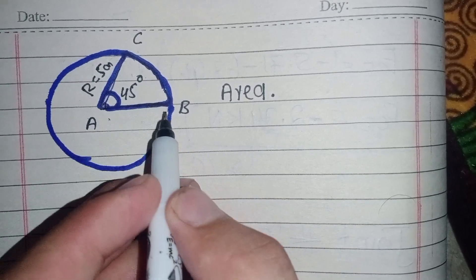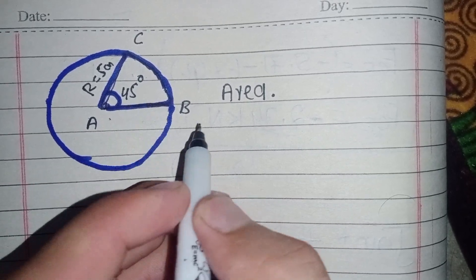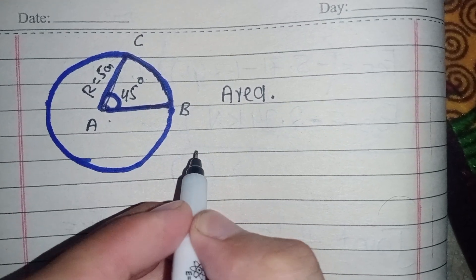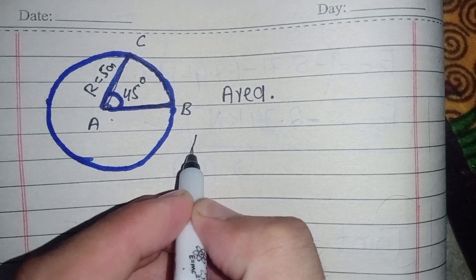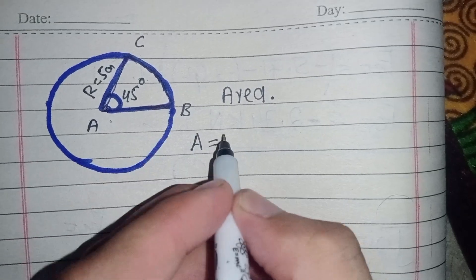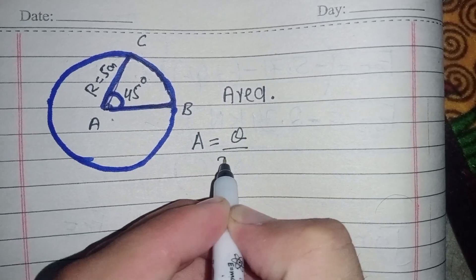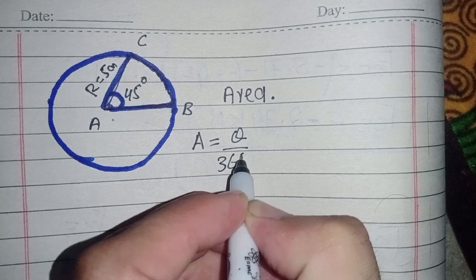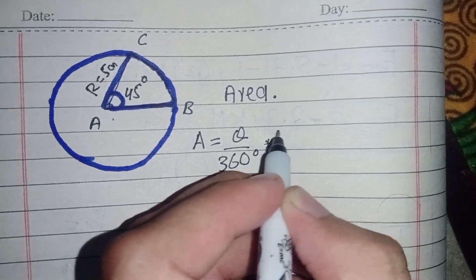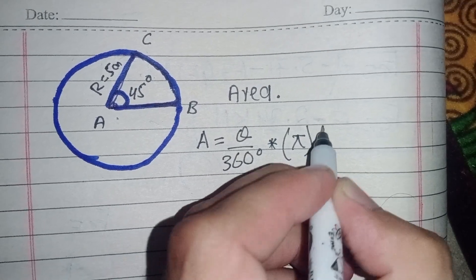How you can find the area of this part of the circle. You can find it by using this equation: area of this part of the circle equals theta divided by 360 degrees, multiplied by pi, multiplied by r squared.